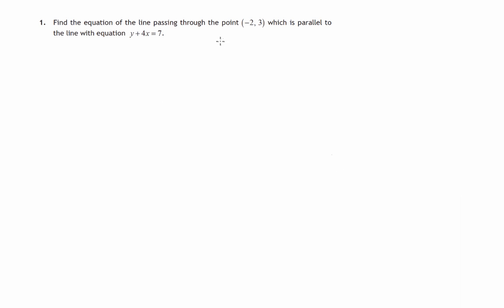We're asked to find the equation of the line passing through the point (-2,3) and we're also told that the line is parallel to the line with equation y plus 4x equals 7.